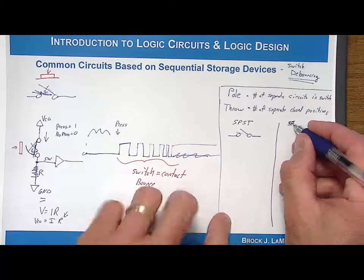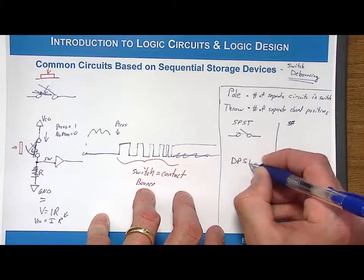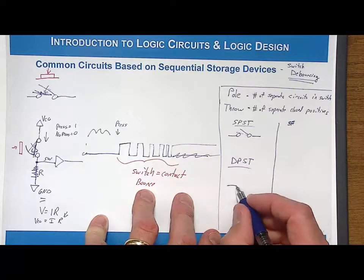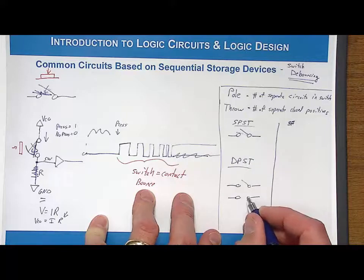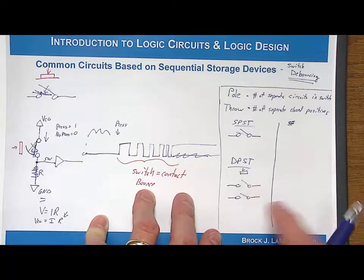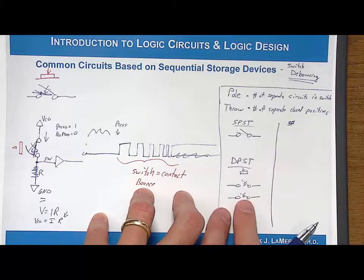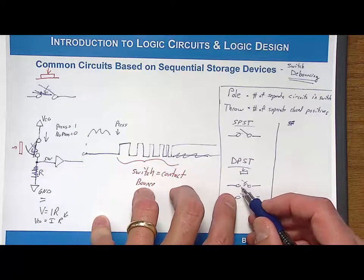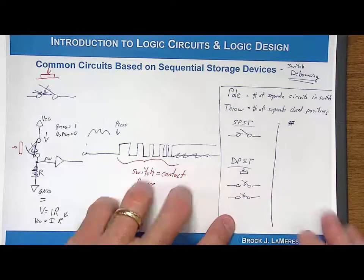Before the single pole double throw, let's look at the double pole single throw. You might have a switch here and a switch here, with one button that is pressed and changes both switches at the same time. That's a double pole single throw - each circuit only has one closed position but there are two of them in the same switch.